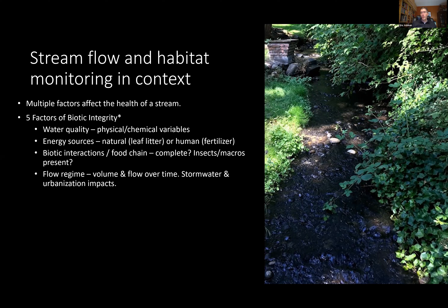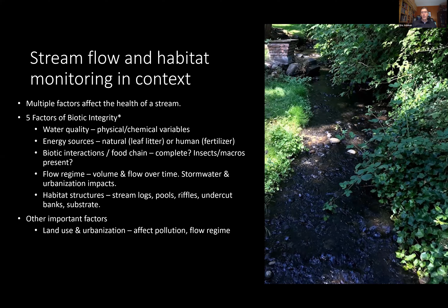Another factor is flow regime. Storm water and urbanization can affect how frequently and how rapidly water flows through a creek. Also, what sort of habitat is present — a natural creek in a rural area has lots of different habitat types, but those can get modified in an urban environment, removing some habitat structures. Other important factors include land use and urbanization, which can affect all those factors, and shade, which affects stream temperature.